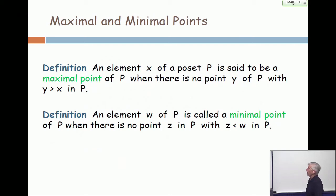All right, maximal and minimal points. An element X is called a maximal point when there's nobody bigger than it. There's no Y in P with Y bigger than X. An element is called a minimal point when there's nobody less than it.